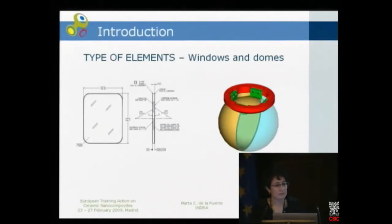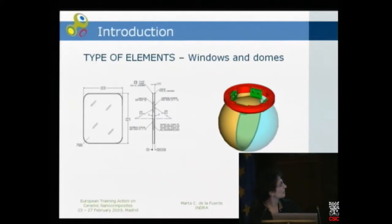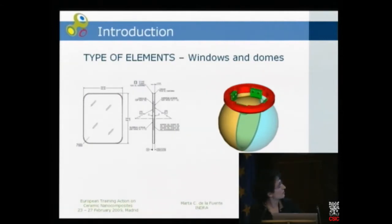What kind of elements are we looking for? First, we have the external elements of the system — the elements that protect the rest of the system from environmental conditions. These are windows, which are usually flat, or domes. Domes are spherical elements, like this one over here. In this particular case, it's a hyperhemispherical dome made of sapphire. It has to be manufactured from two halves that are joined together, and then attached to a metallic holding structure.